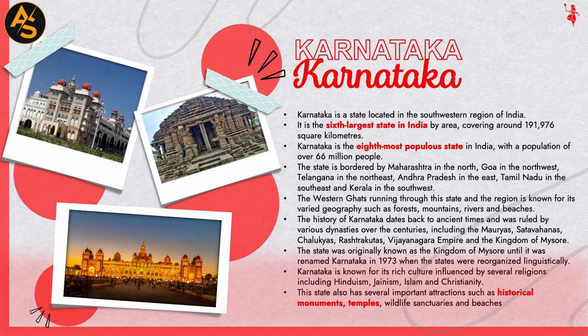The state is bordered by Maharashtra in the north, Goa in the northwest, Telangana in the northeast, Andhra Pradesh in the east, Tamil Nadu in the southeast, and Kerala in the southwest. The Western Ghats run through the state and the region is known for its varied geography such as forests, mountains, rivers, and beaches.